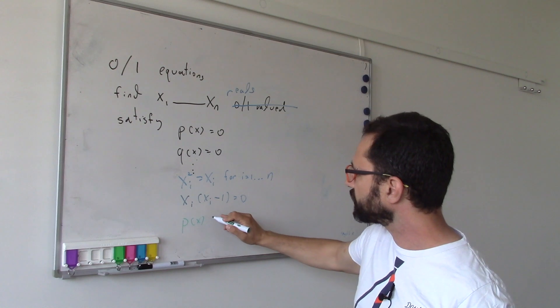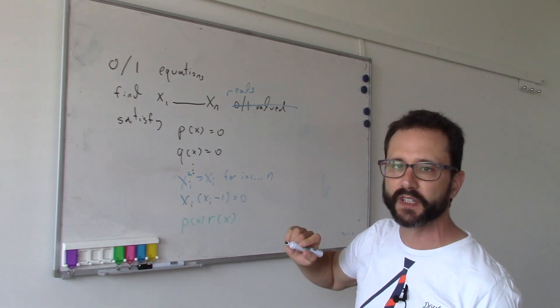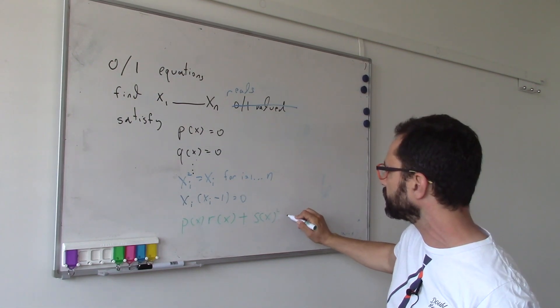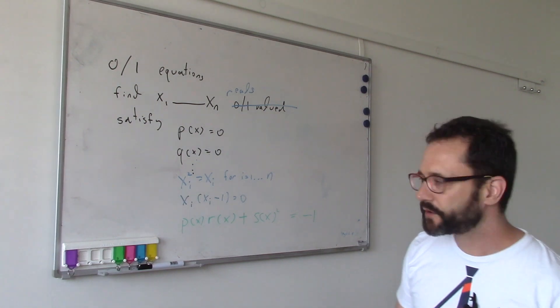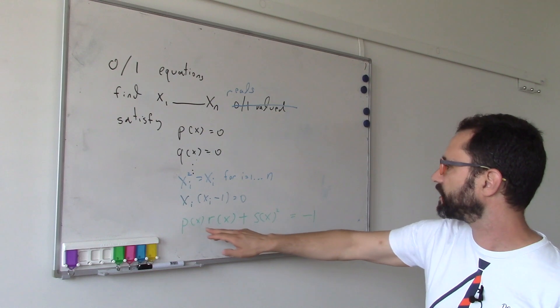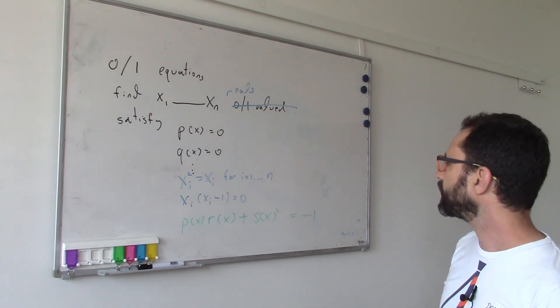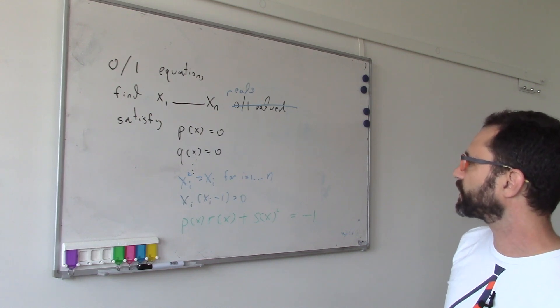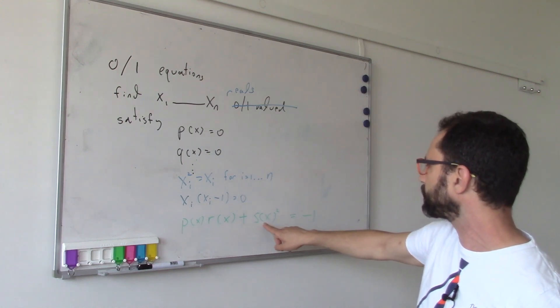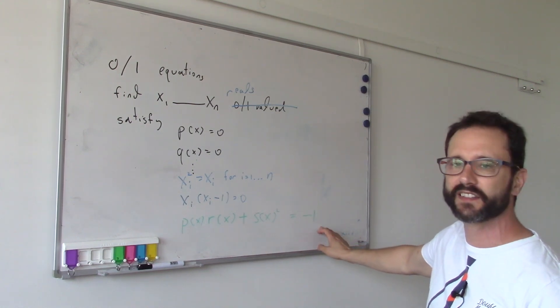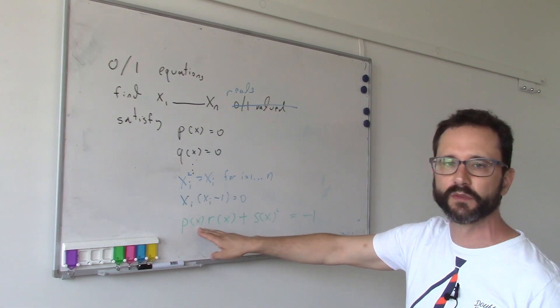So suppose I can multiply this by any other polynomial I want. Say I can multiply p(x) times r(x) and I add it to s(x)² and I get -1. So suppose I find this equation that p(x)r(x) + s(x)² = -1. Then I basically get a contradiction, because if there was an x that solved this problem, it would zero out this part, this part will be non-negative, and this right-hand side is negative. So that would certify that you cannot find an x that is a root of p(x).